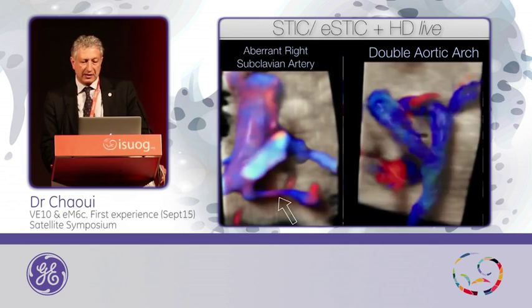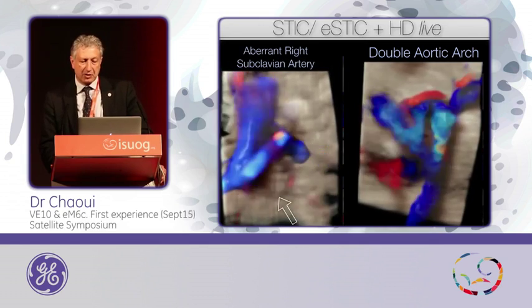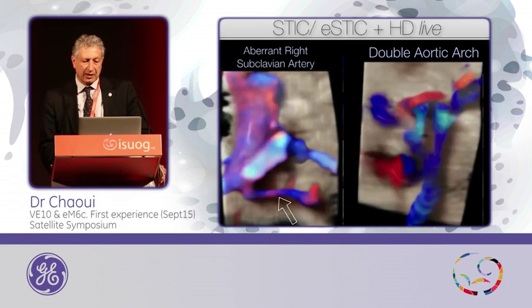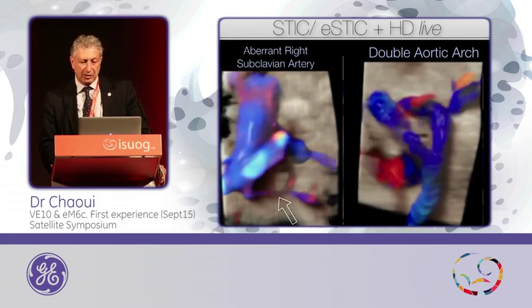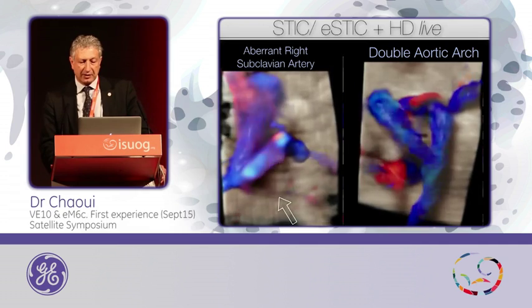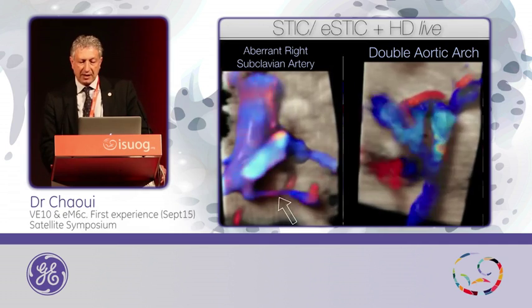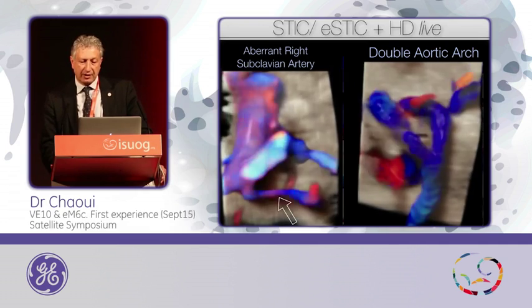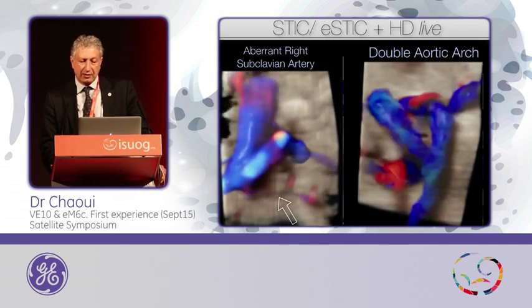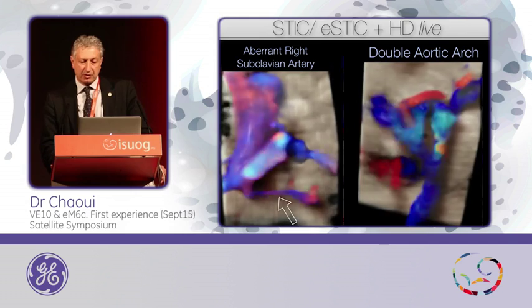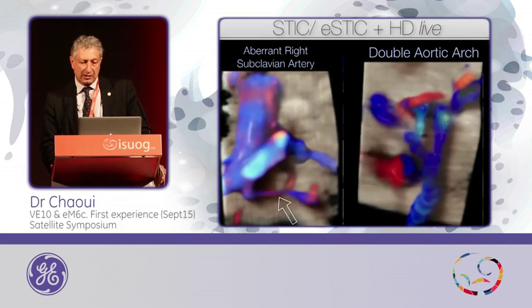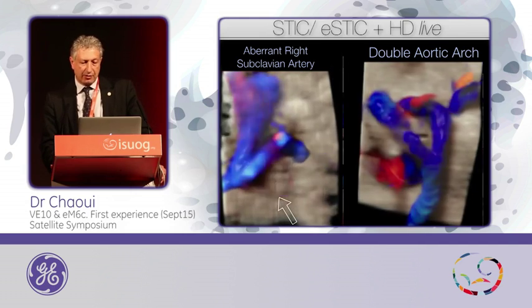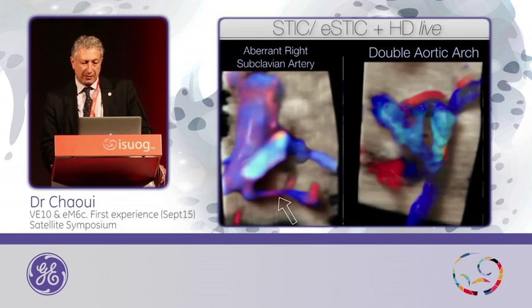And for tiny vessels — the ramification of the aortic arch — here is the aberrant subclavian artery, and this is the double aortic arch. You see the right arch, the trachea, the left arch, and the ductus arteriosus as the third arc in this plane.